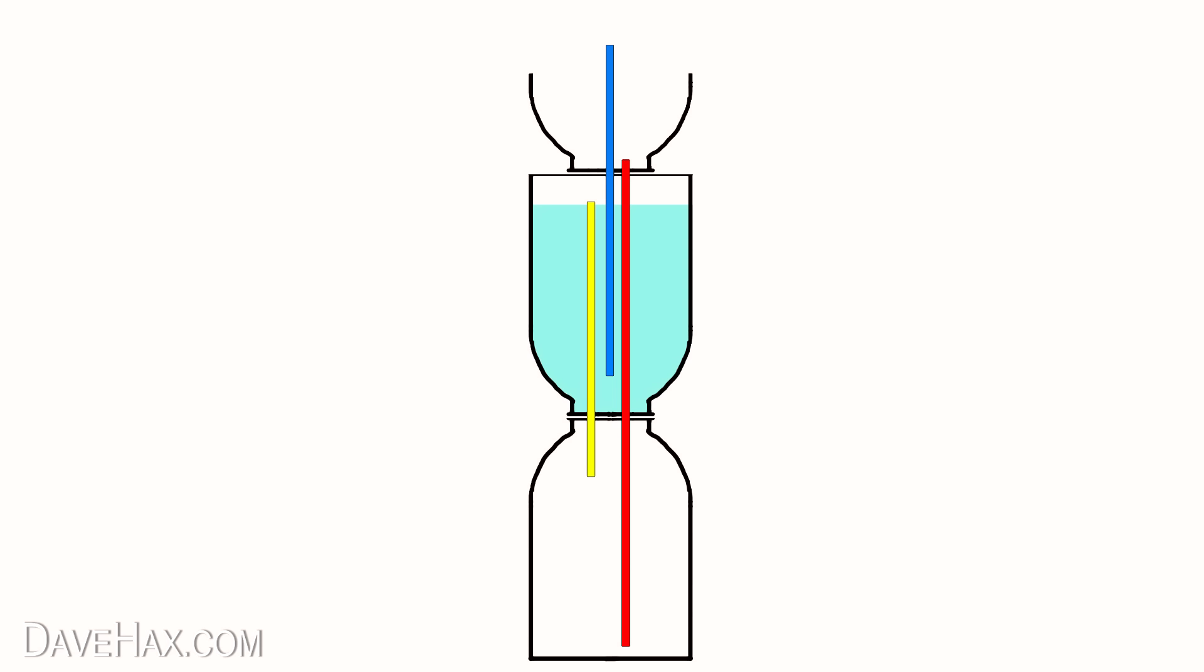So what's happening here? Let's take a look. Once we've primed the fountain so there's water in the middle bottle, we pour more into the funnel at the top. This pours down the red straw into the bottom bottle and displaces the air in this bottle.